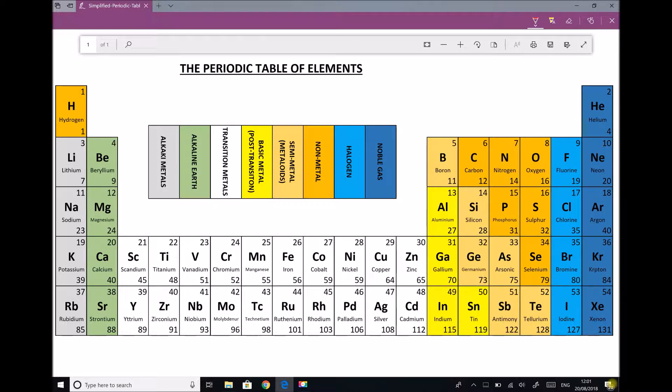First of all, I've rounded the atomic mass for each of these atoms and that's the number that's represented in the bottom right-hand corner for each of these elements. And the reason I did that was just to make things a little bit more straightforward when we come to determining the number of protons, neutrons and electrons.